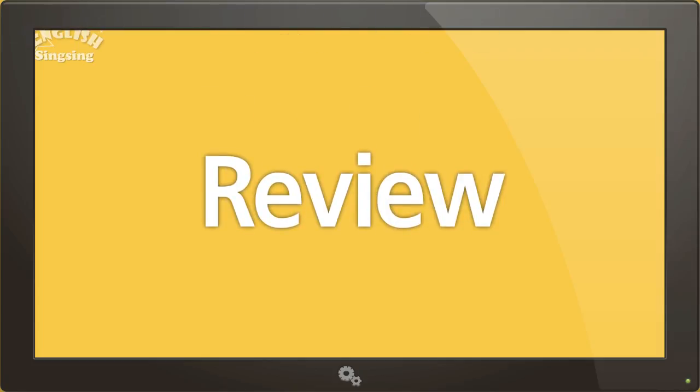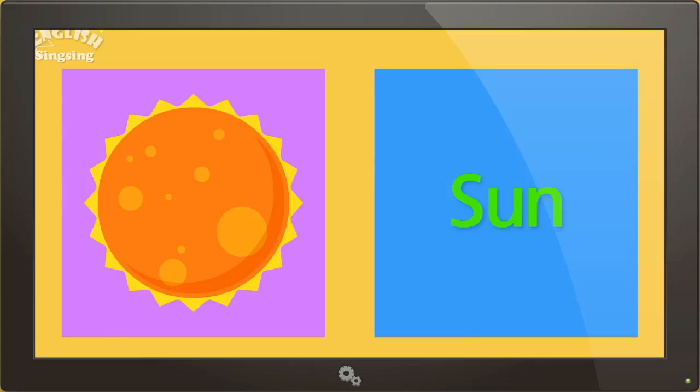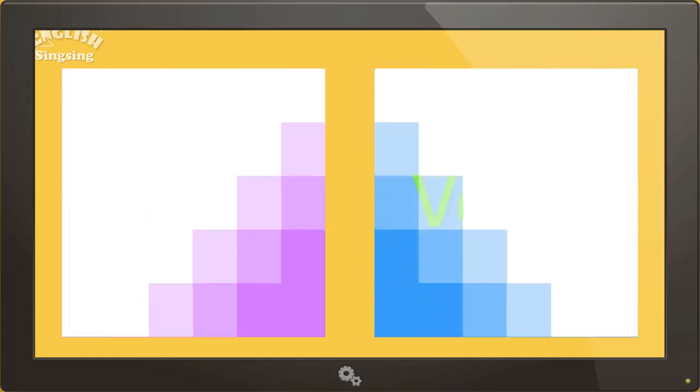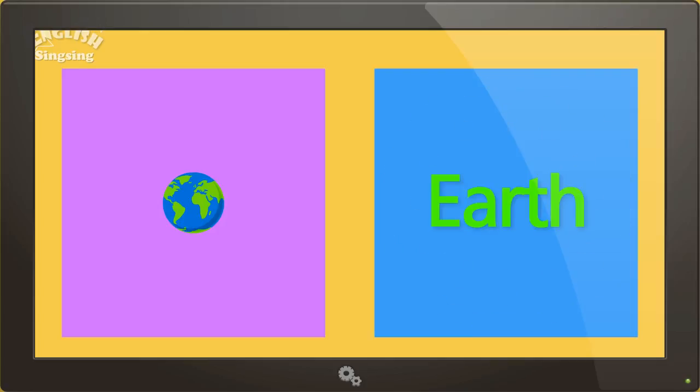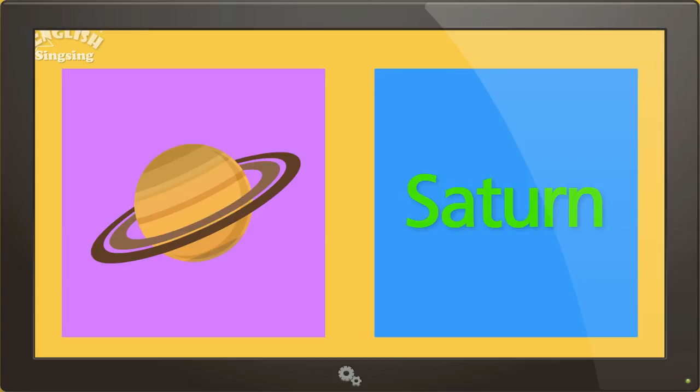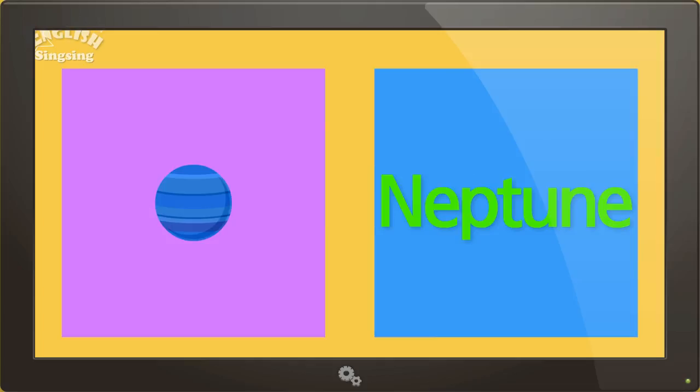Review: Solar System - Sun, Mercury, Venus, Earth, Mars, Jupiter, Saturn, Uranus, Neptune.